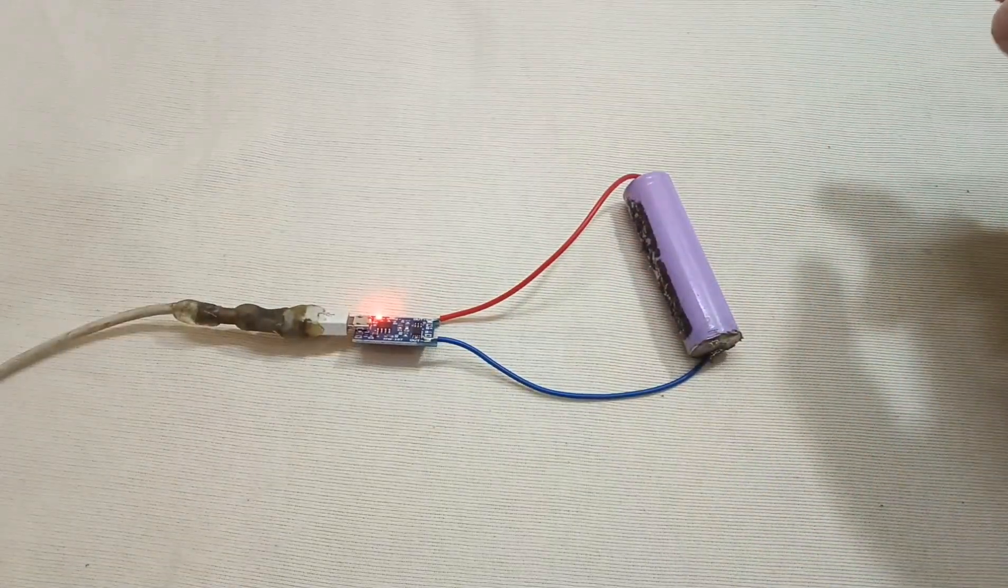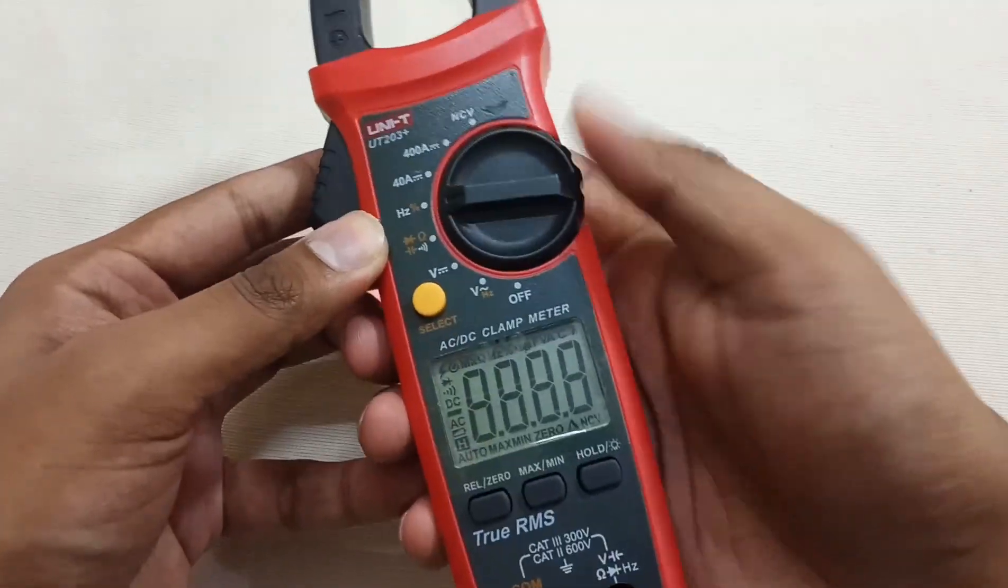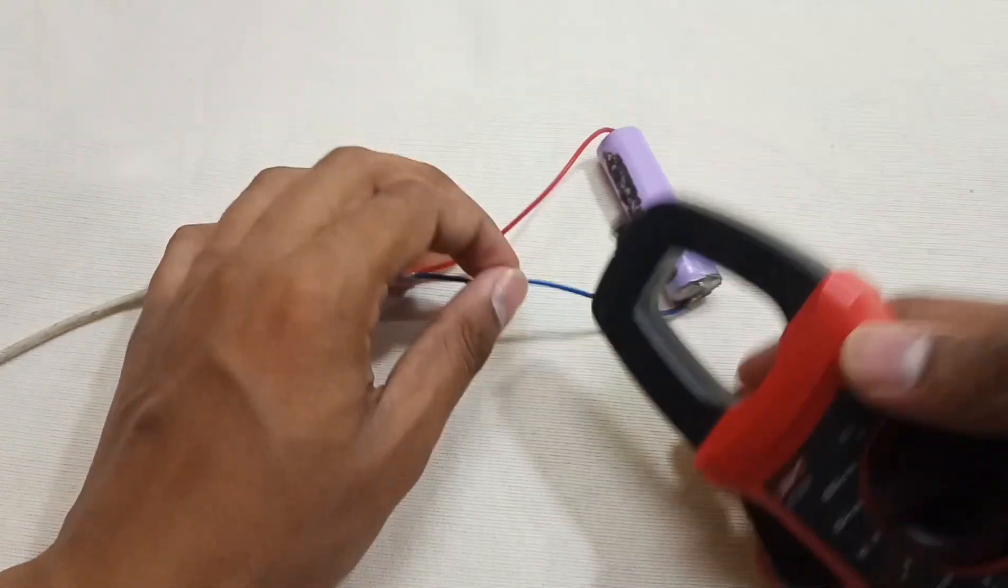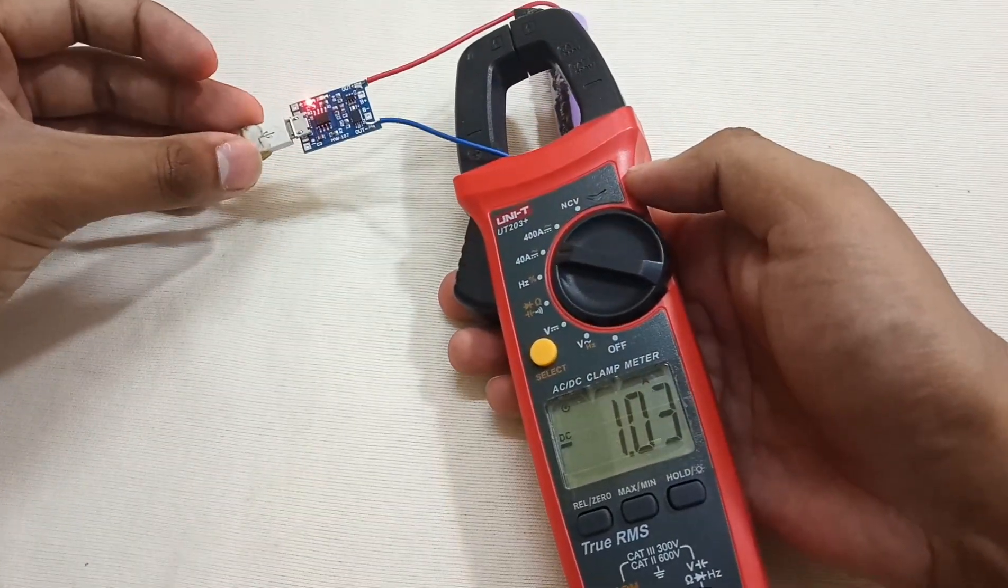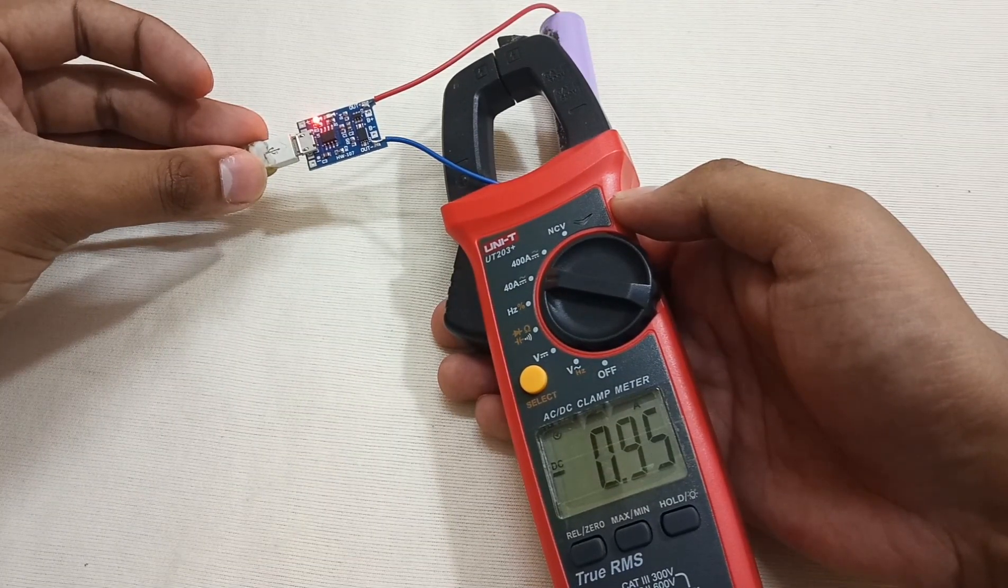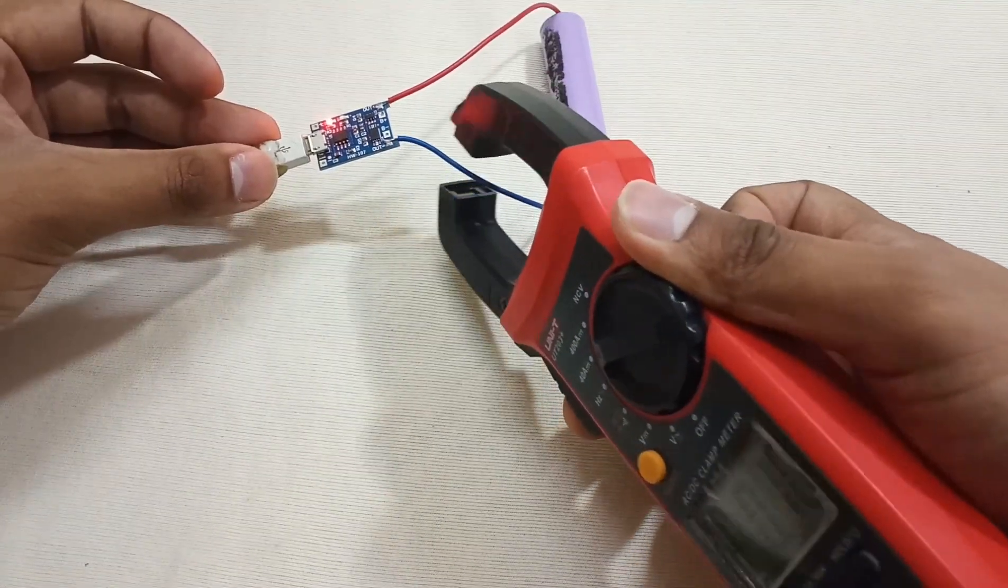Let's measure the current to see how fast this module is charging the battery. Basically it's a 1 ampere module, and you can see that it's charging the battery with 1 amp. It will not go more than that because it supports 1 ampere charging.